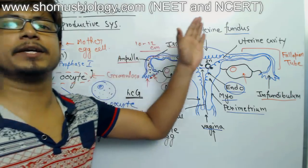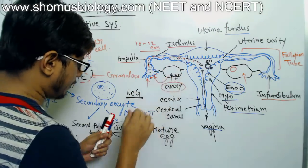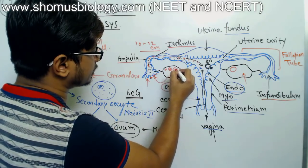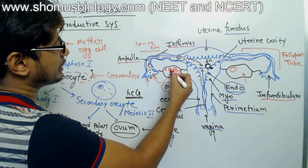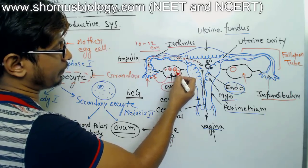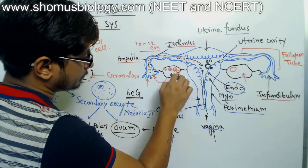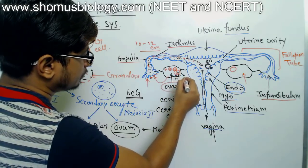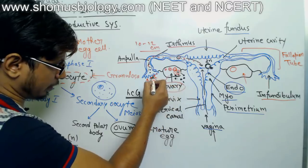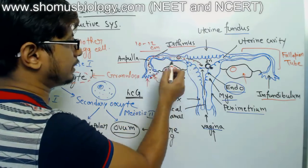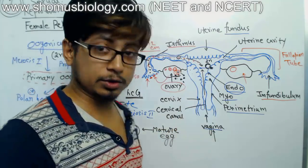This is the sequence of events inside the ovary: oogonium → primary oocyte → secondary oocyte → tertiary follicle → Graafian follicle, where the ovum is produced and released by rupturing. This process takes place in both ovaries simultaneously. Once the ovum is released, fertilization takes place inside the fallopian tube, forming a zygote. The zygote is then embedded into the endometrium — a process known as implantation.